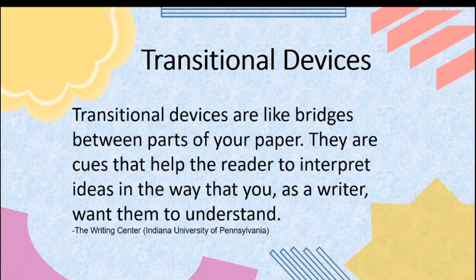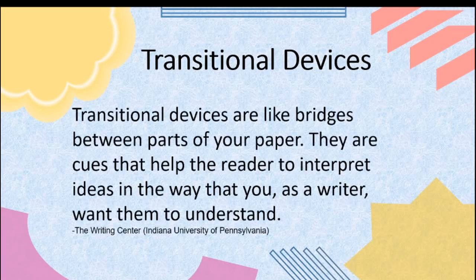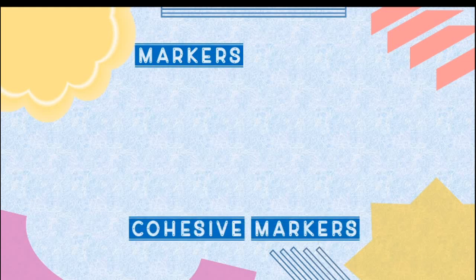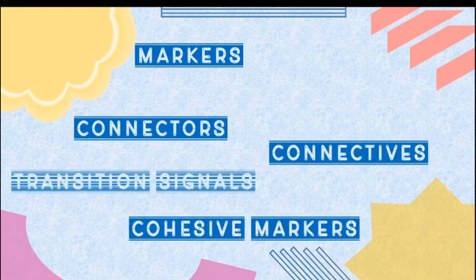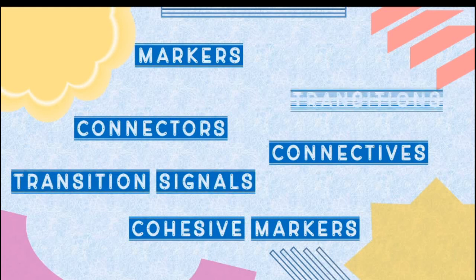Transitional devices, according to the Writing Center of Indiana University of Pennsylvania, are like bridges between parts of your paper. They are cues that help the reader interpret ideas in the way that you as a writer want them to understand. Transitional devices are also known as markers, cohesive markers, connectors, transition signals, and transitions.